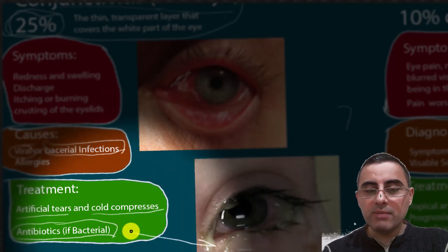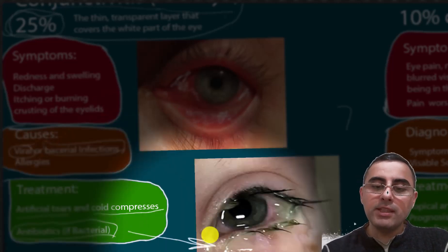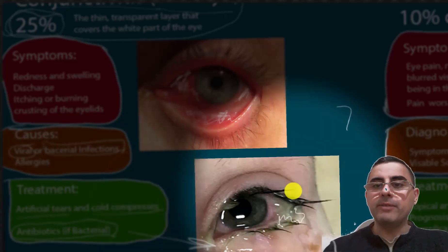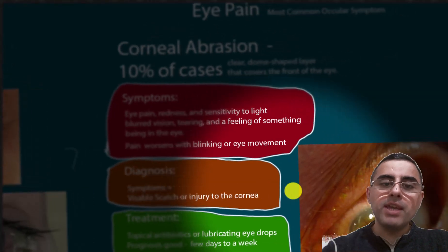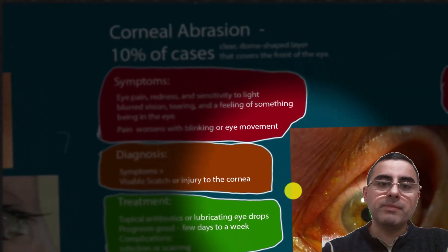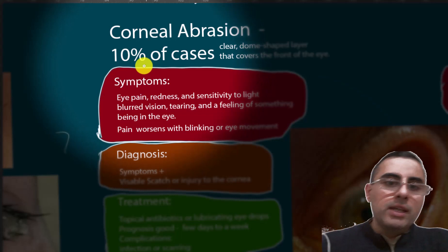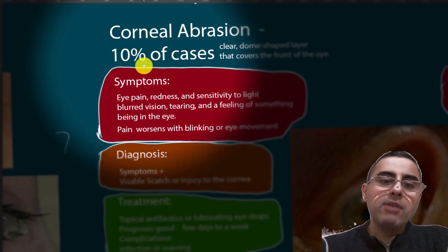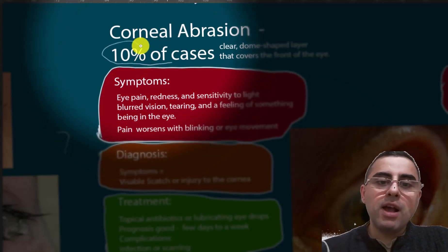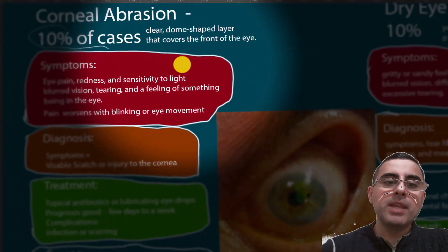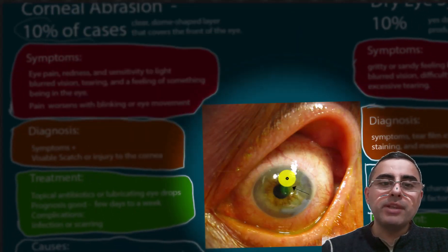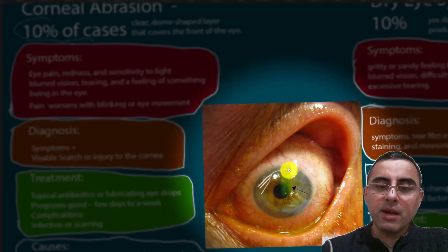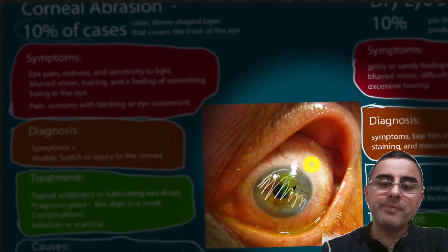You can see bacterial infection with greenish discharge from the eye. Another important cause of eye pain is corneal abrasion, which accounts for 10% of eye pain cases. The cornea is a clear dome-shaped layer that covers the front of the eye — this part shown here.